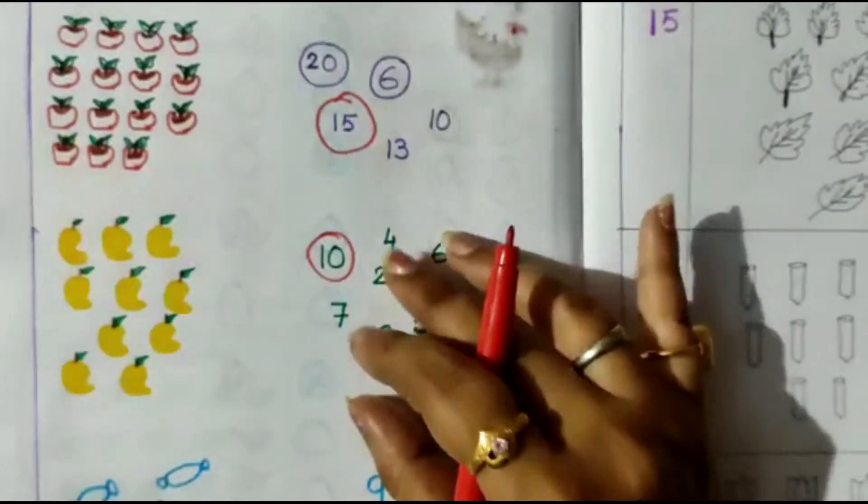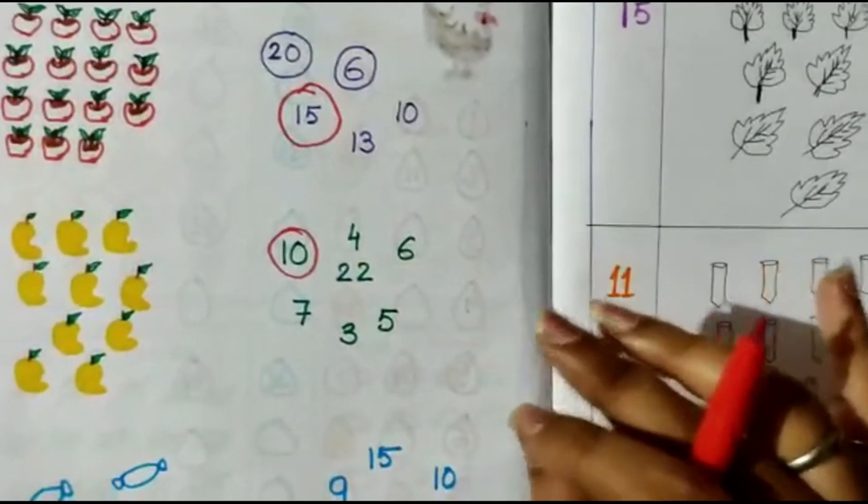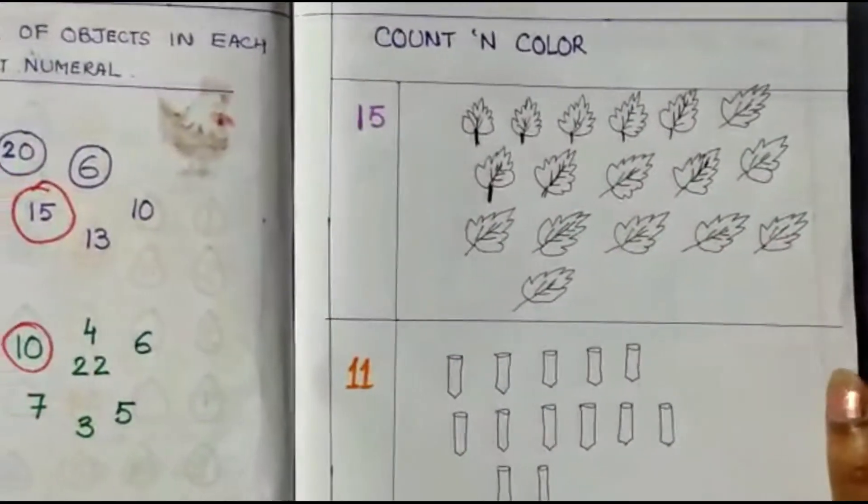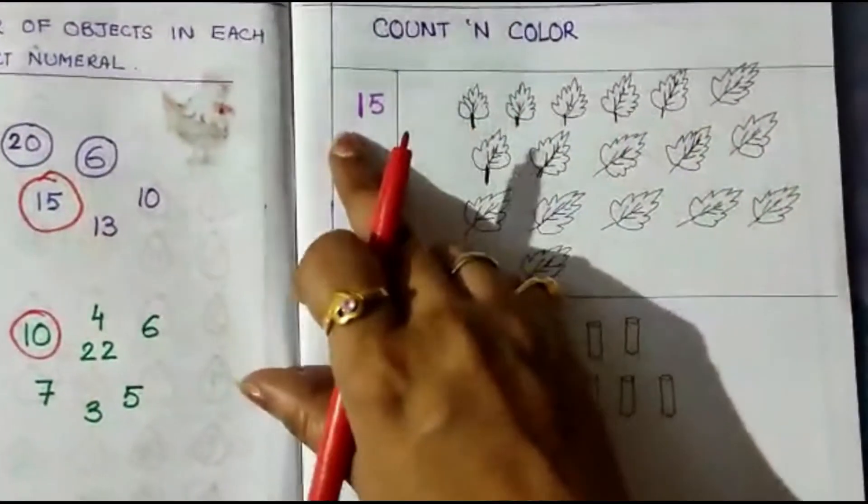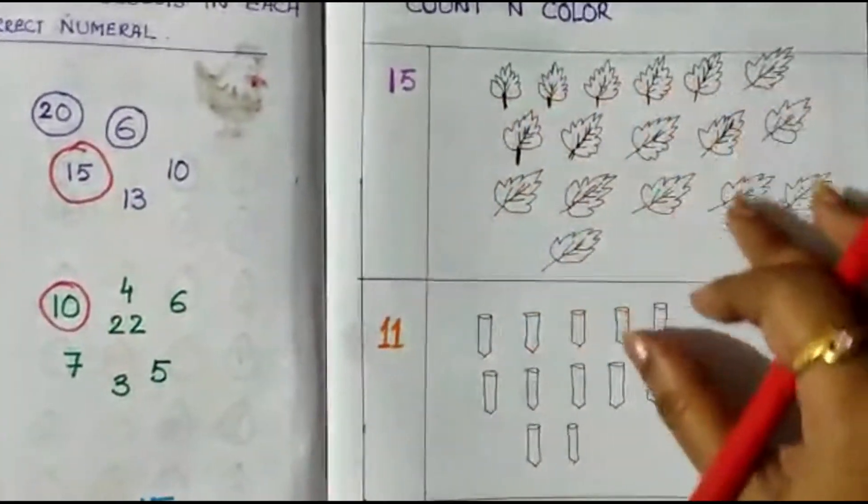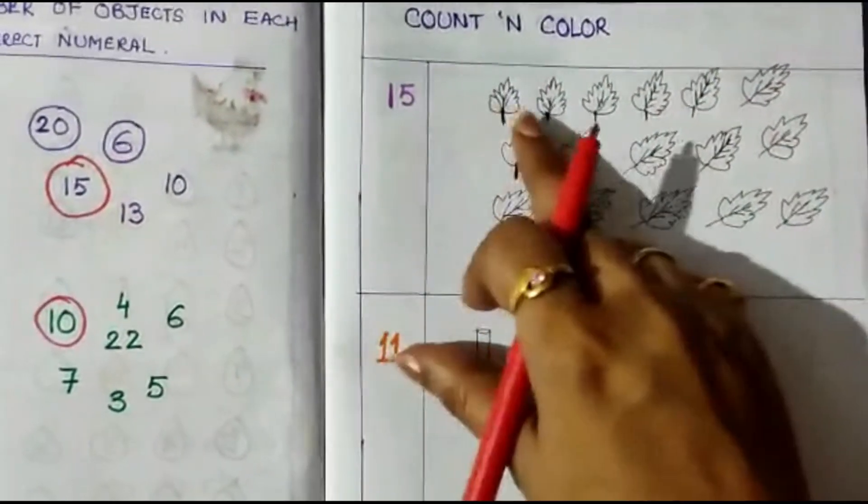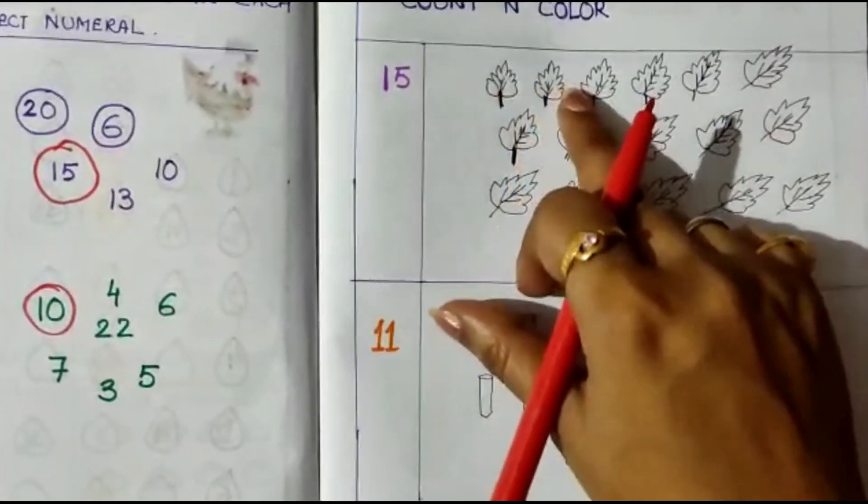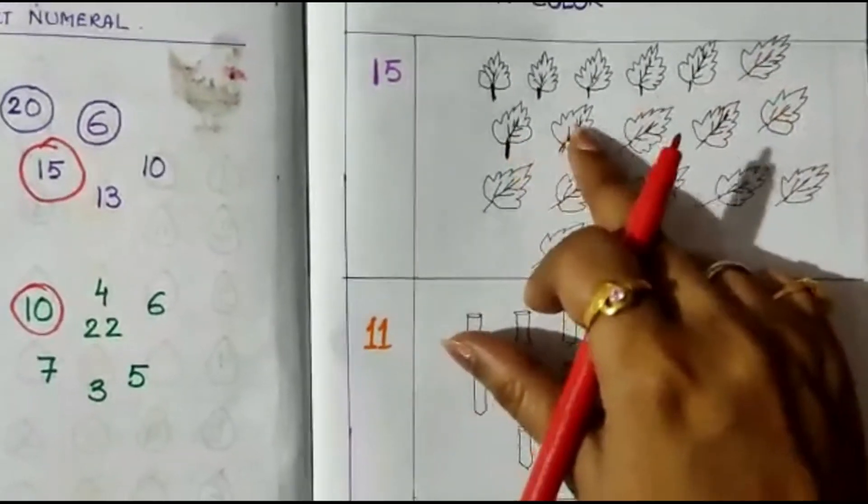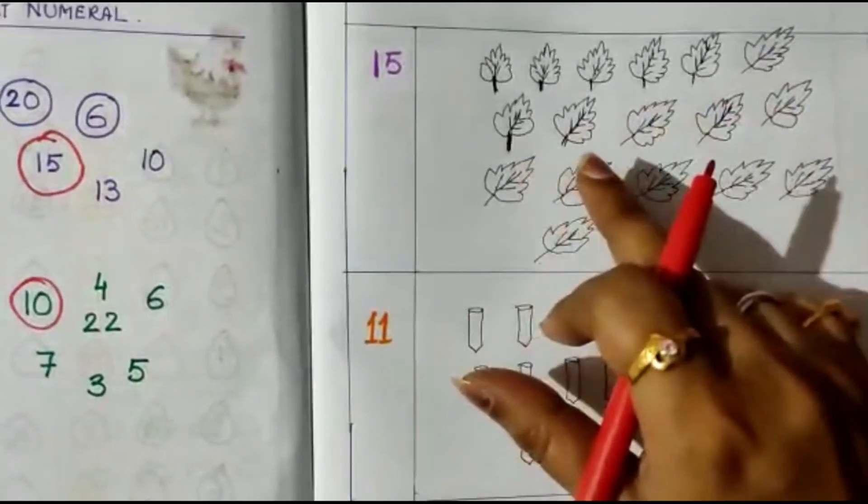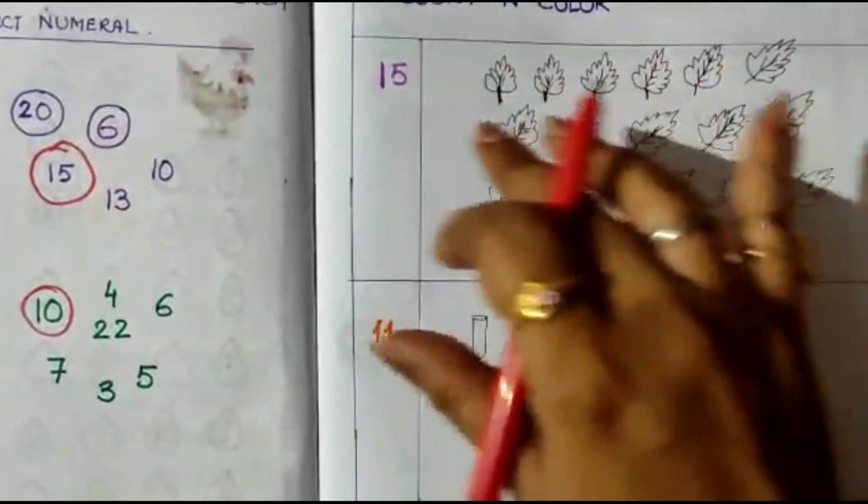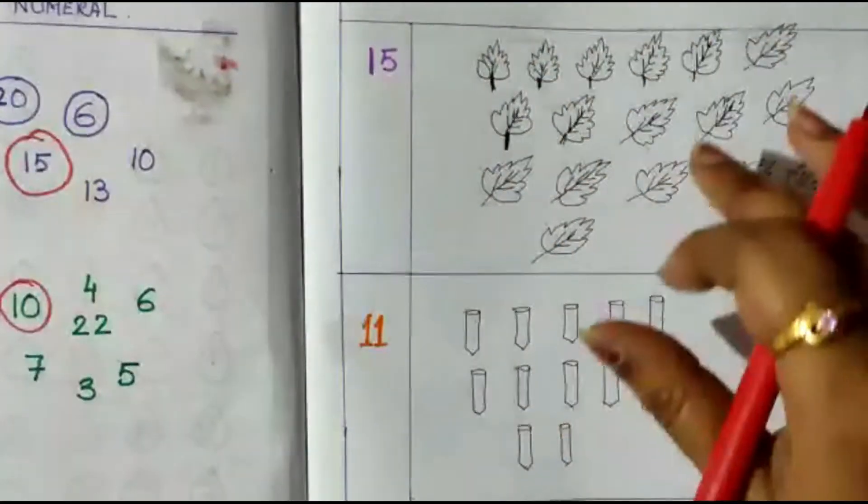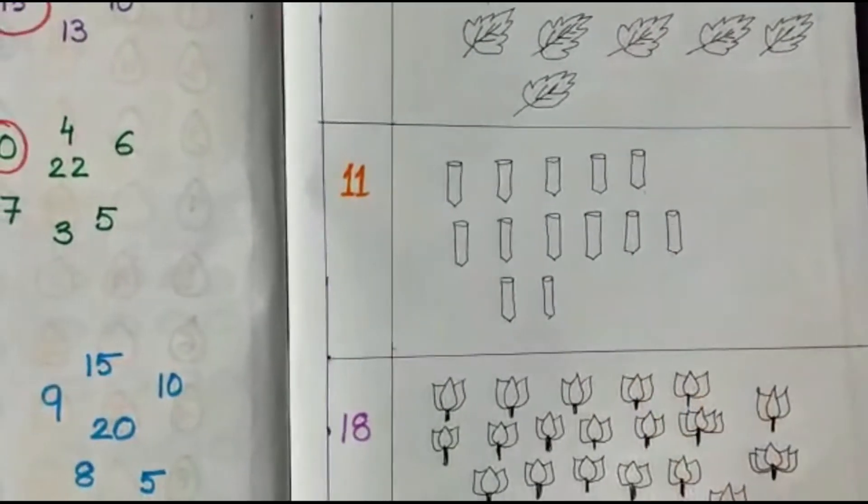We can easily complete our worksheet. Count and color: here we have the number 15, here we have a leaf drawn. Count first where is 15: 1, 2, 3, 4, 5, 6, 7, 8, 9, 10, 11, 12, 13, 14, 15. Here we will count the number and then color the leaves.